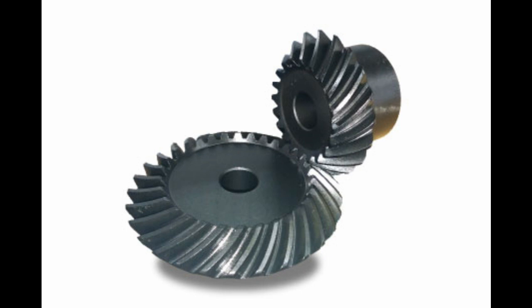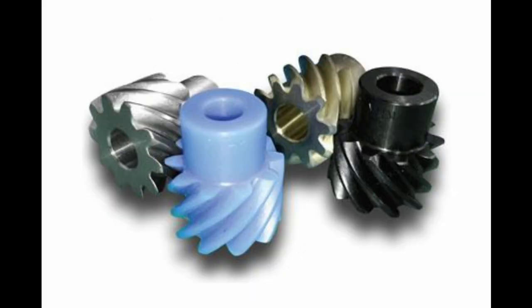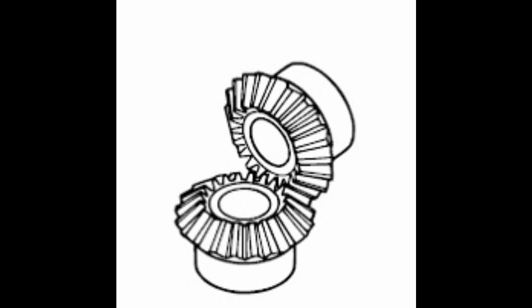Screw gears are a pair of same-hand helical gears with a twist angle of 45 degrees on non-parallel, non-intersecting shafts. Because the tooth contact is a point, their load-carrying capacity is low and they are not suitable for large power transmission. Since power is transmitted by the sliding of the tooth surfaces, it is necessary to pay attention to lubrication when using screw gears. There are no restrictions on combinations of number of teeth.